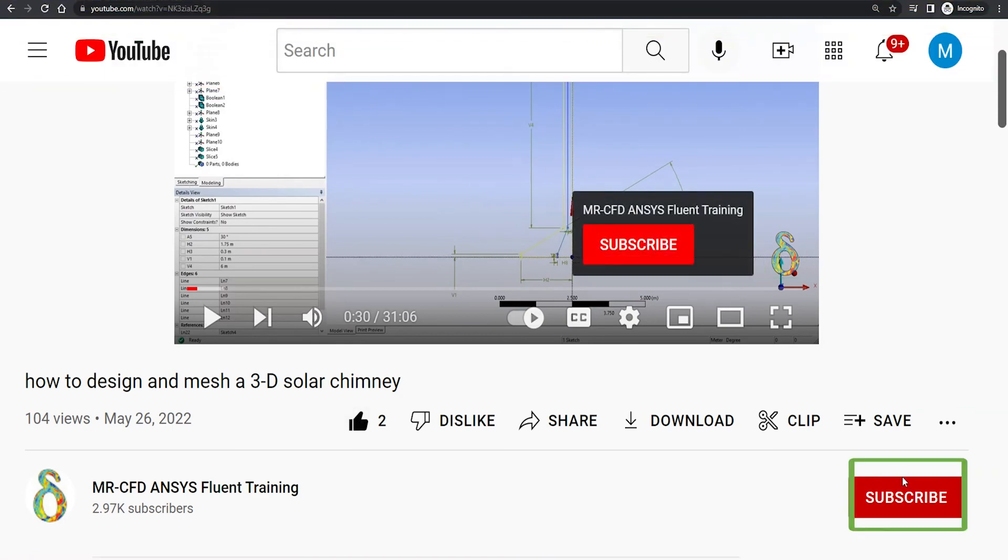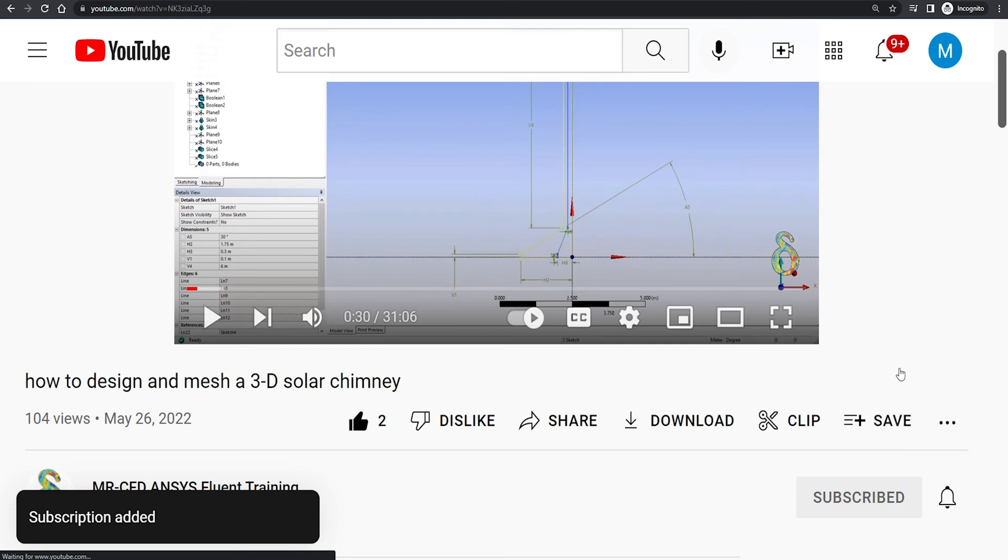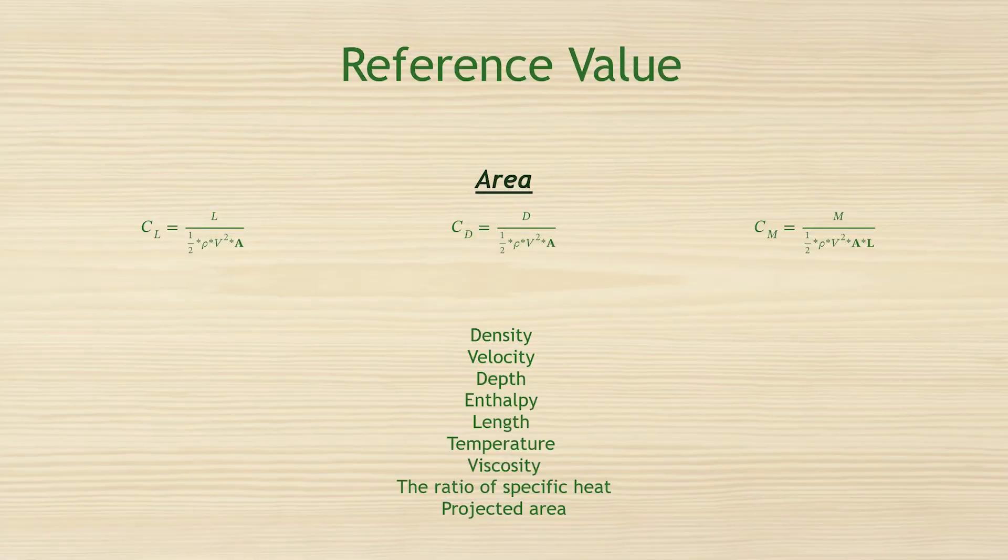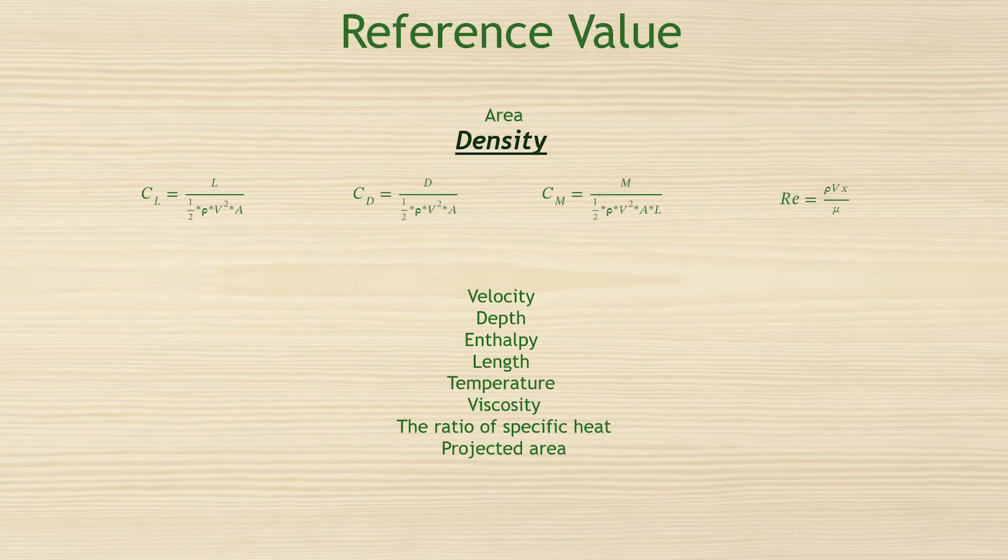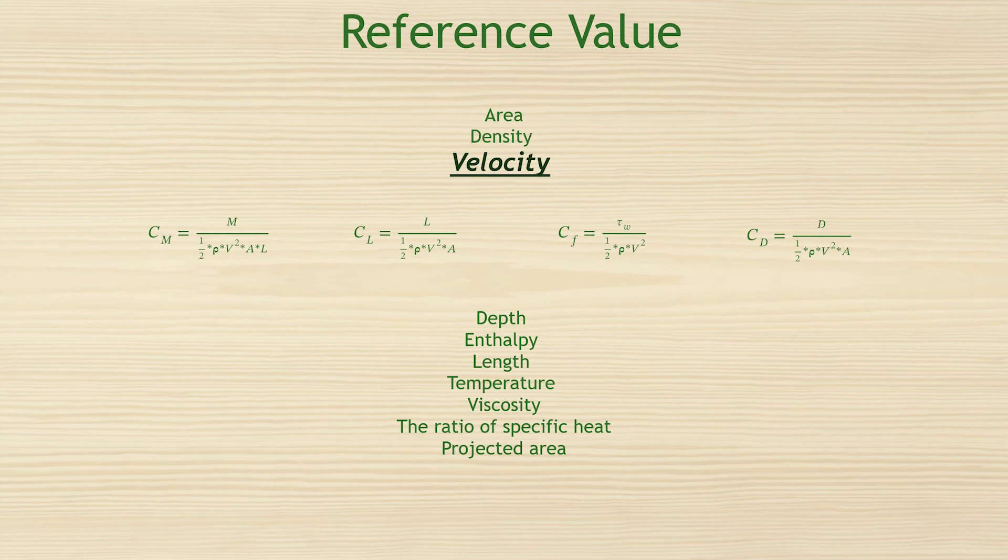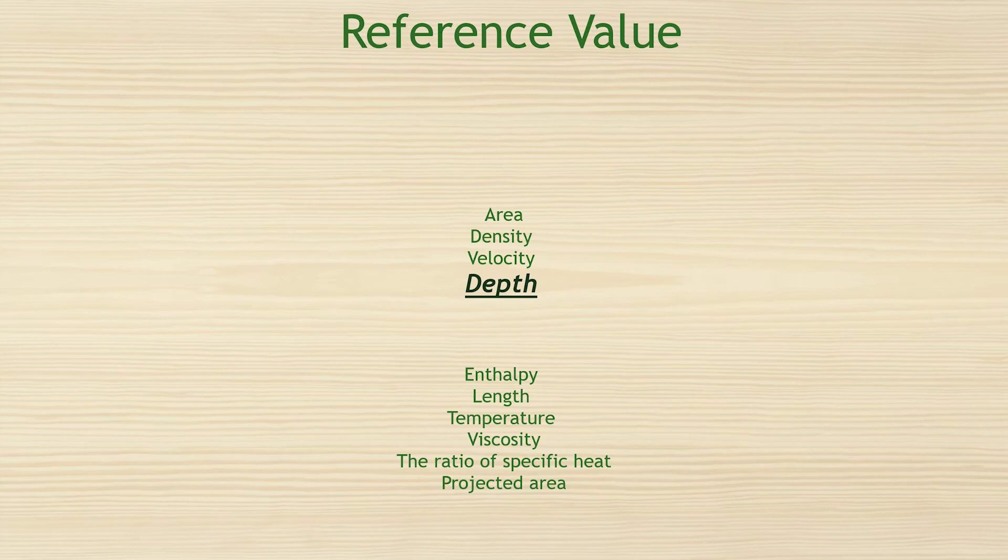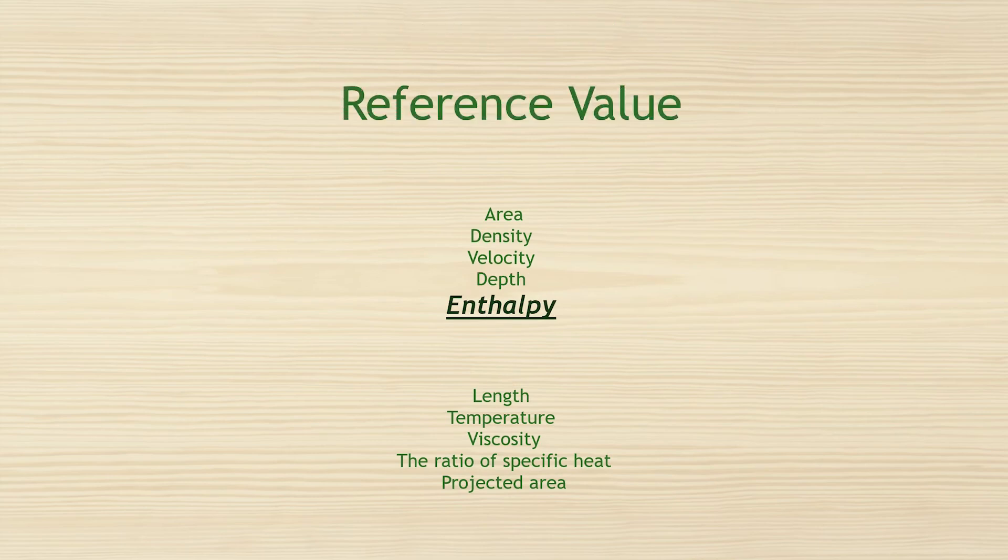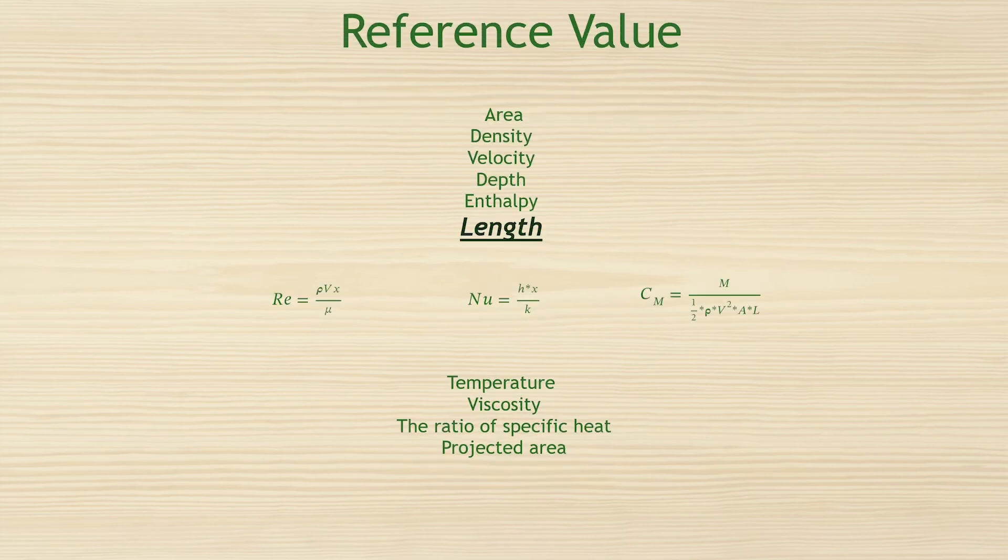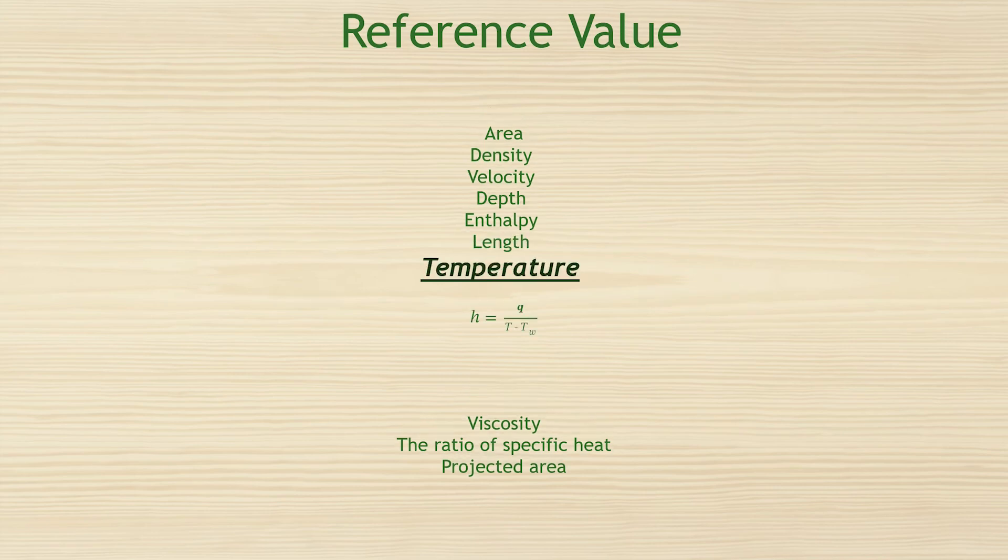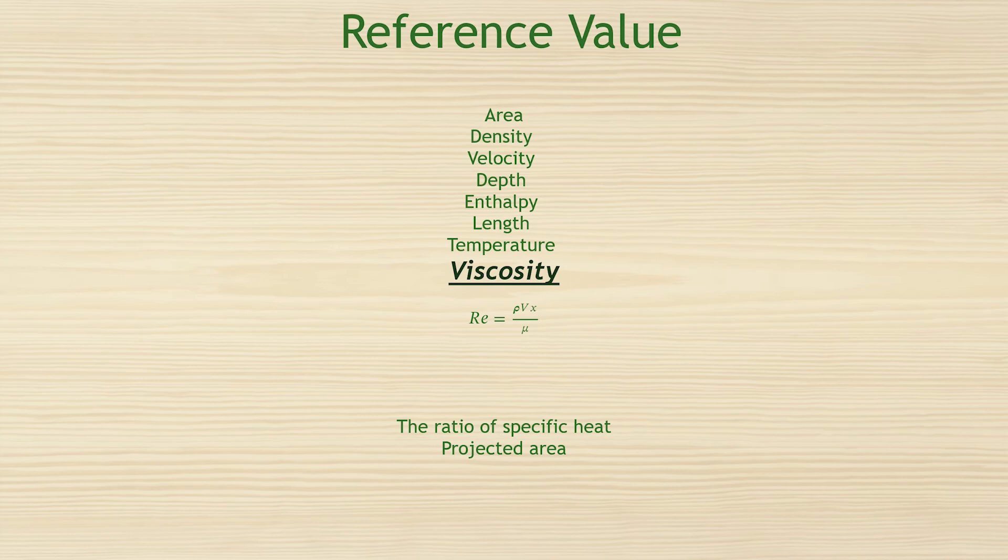Kindly like and subscribe to MasterCFD channel and tap the bell to get new video updates. Area parameter is used to find coefficients such as lift, drag, and momentum or pitch. Density is used for the calculation of force and moment coefficients and Reynolds number. The velocity is used for the calculation of force and moment coefficients and Reynolds number. The temperature is used for the calculation of heat transfer coefficient and entropy. The viscosity parameter is used for evaluating the Reynolds number.